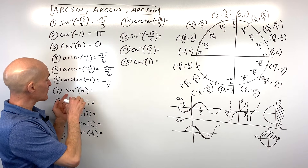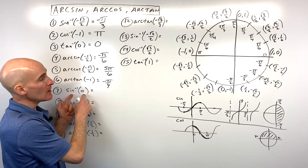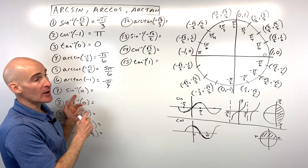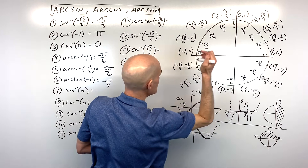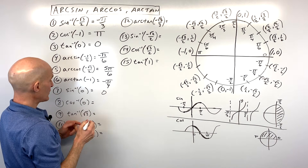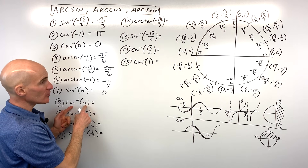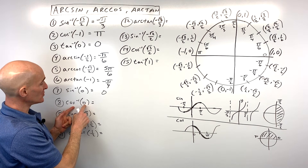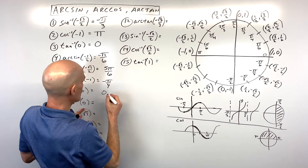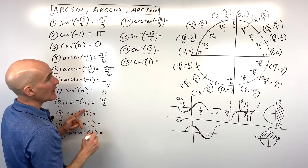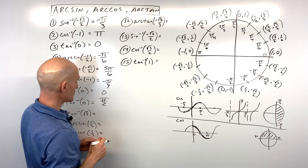For number seven, the sine inverse of zero — sine of what angle equals zero? Sine is the y-coordinate, and the y-coordinate is zero at zero radians. For number eight, the cosine inverse of zero — cosine of what angle equals zero? Cosine is the x-coordinate, and the x-coordinate is zero at pi over two. With cosine inverse restricted from zero to pi, that's just the one solution: pi over two.